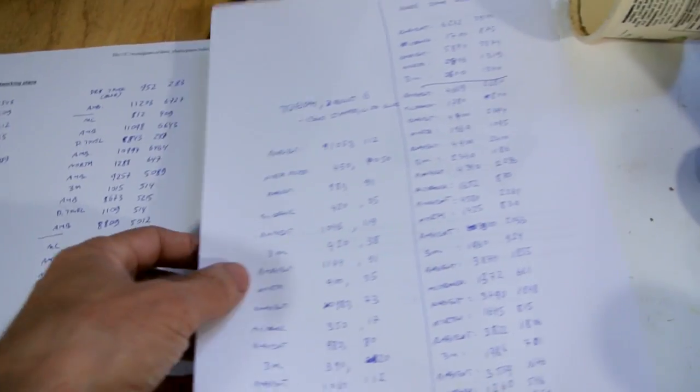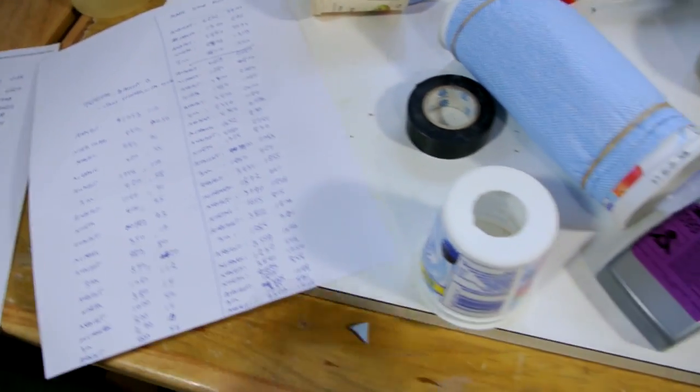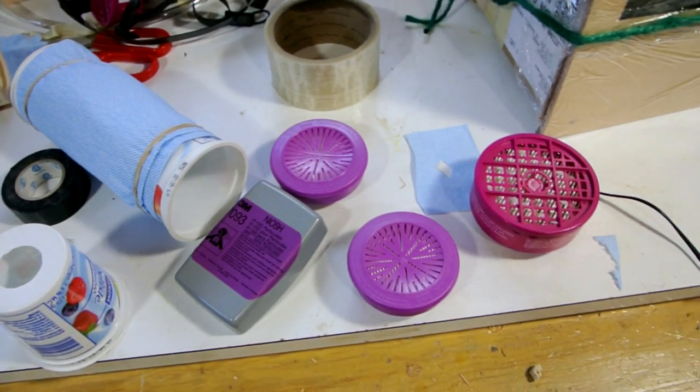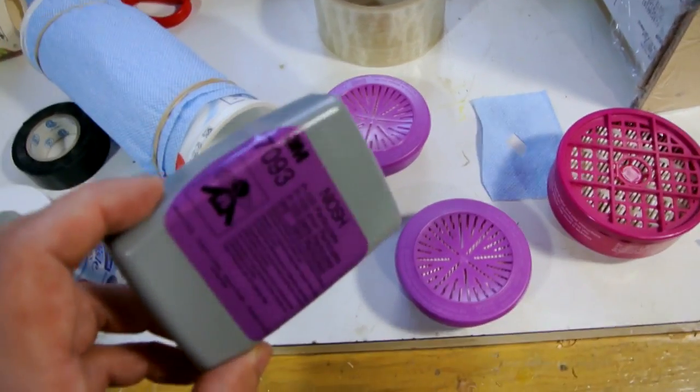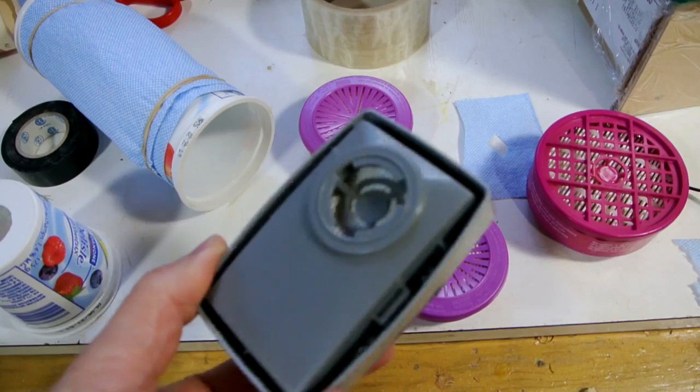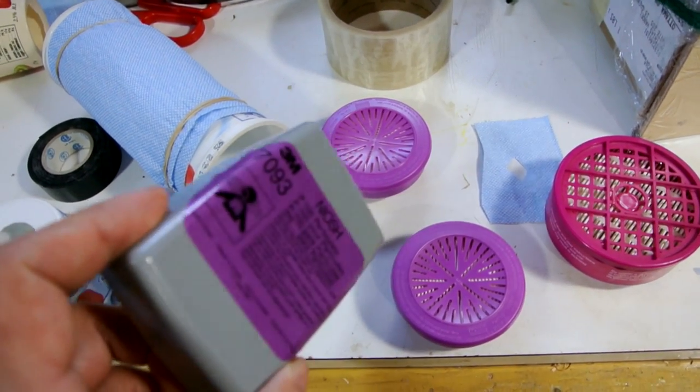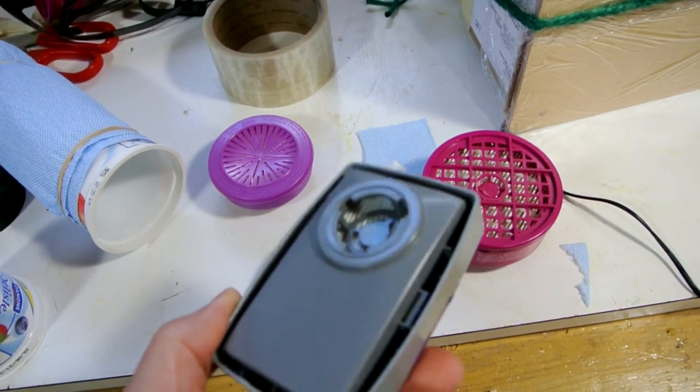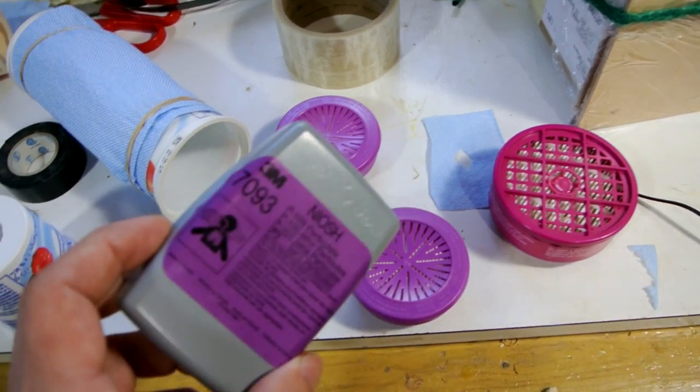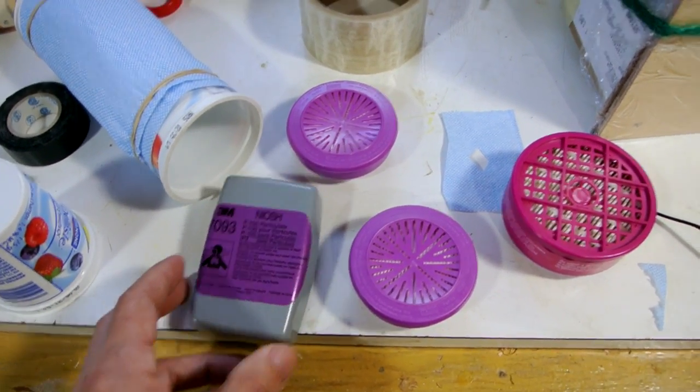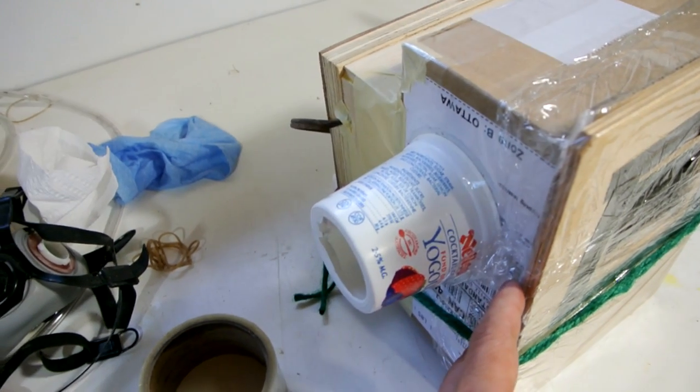So after reams and reams of numbers and readings and what not, I can't really come to any sort of conclusive result. These things they're rated P100. They're supposed to be like 99 point something percent effective. They're probably not quite that effective. But I'm getting much less than that. And I suspect it has much to do with an imperfect apparatus.